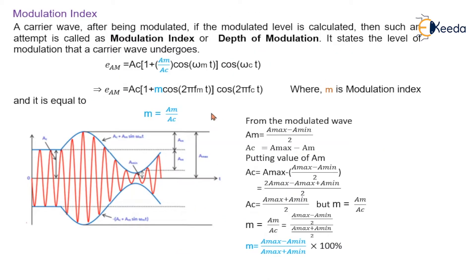Modulation index — recalling the definition of modulation, particularly amplitude modulation: the amplitude of the carrier changes in accordance with the amplitude of the modulating signal. As the modulating signal changes its level, the carrier will attain its amplitude accordingly. Modulation index indirectly indicates the depth of the modulation — how much the carrier signal is able to cover the modulating signal — and it is indicated by the modulation index.